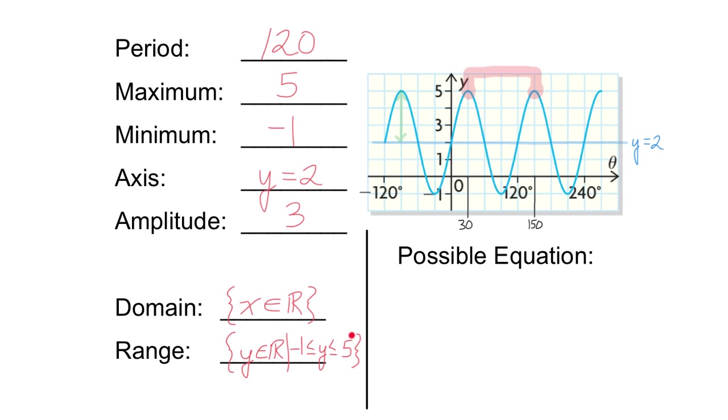So using that, I can write the restrictions on y. y is in between negative 1 and 5. Remember, the less than or equals to symbol has that line underneath to indicate that y can also equal negative 1, and it can equal 5.